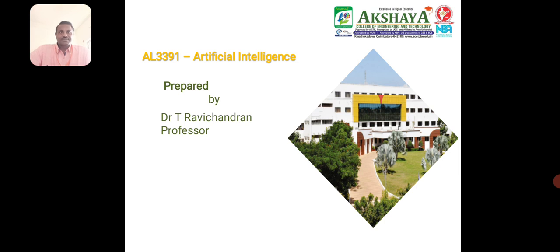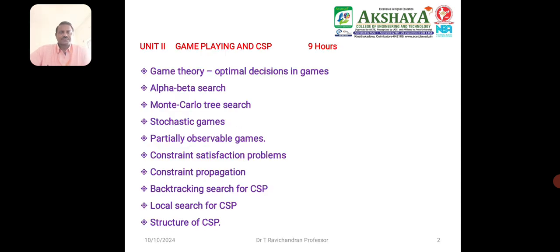Today we are discussing about the subject Artificial Intelligence, Subject Code AIL 3391. Today's topics we are discussing from Unit 3: Game Theory and Optimal Decision Games, Alpha-Beta Search, and Monte Carlo Tree Search.